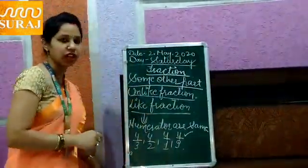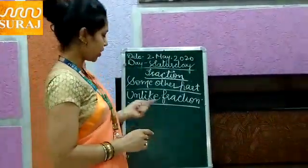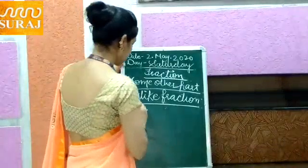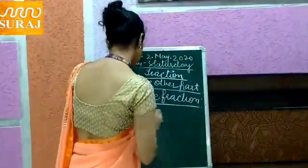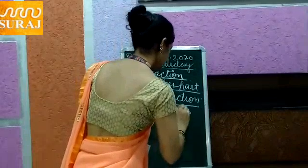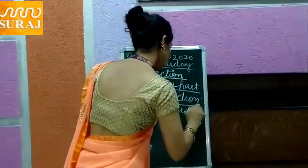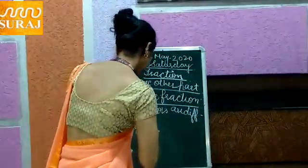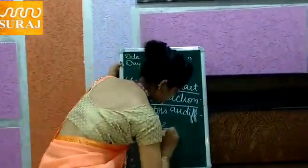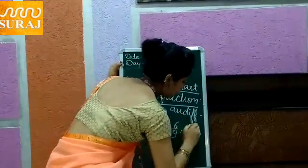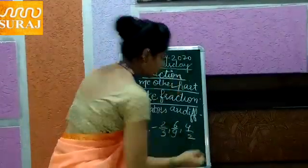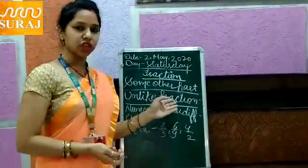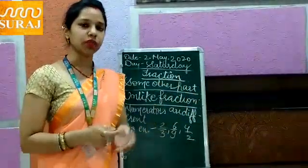Now we will study about unlike friction. Unlike frictions are those fractions which numerators are different. For example, 2 upon 3, 6 upon 9, 4 upon 2 — in this case all the numerators are different, so we will call that unlike friction. In like friction all the numerators are same. That is the difference between like friction and unlike friction.